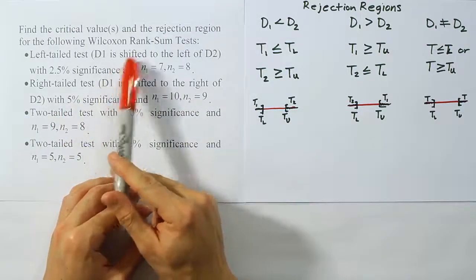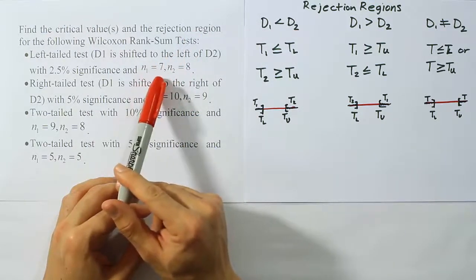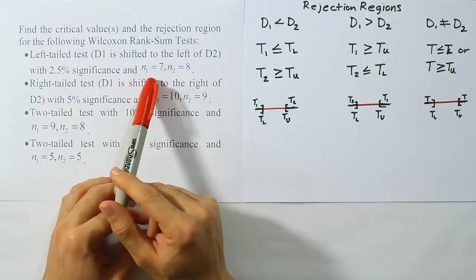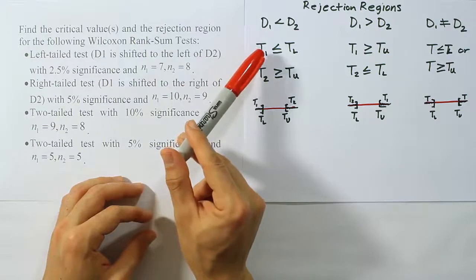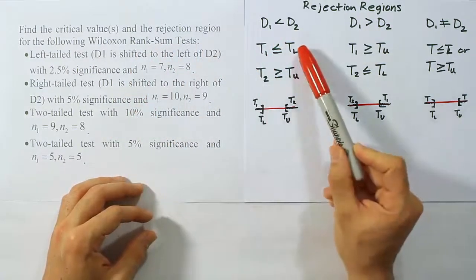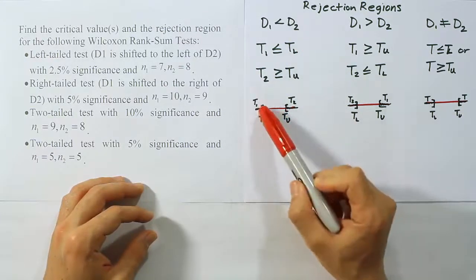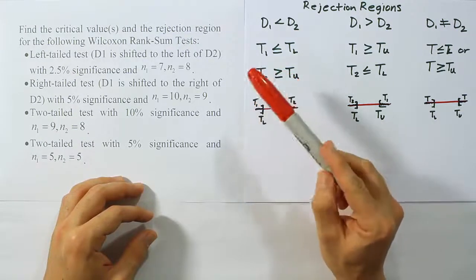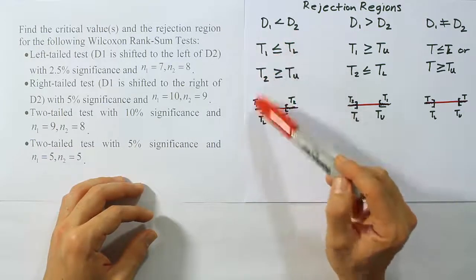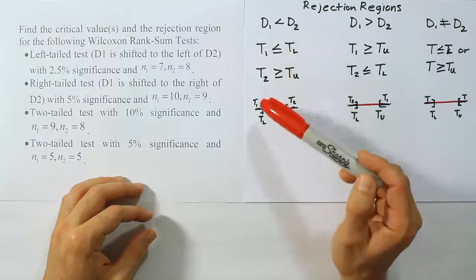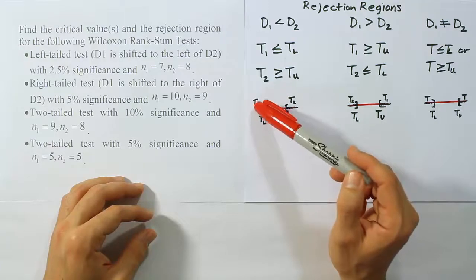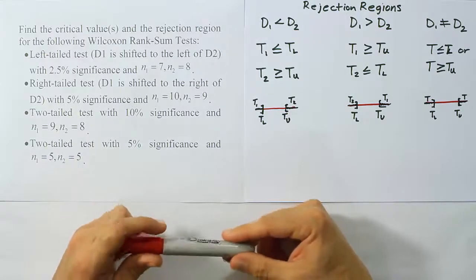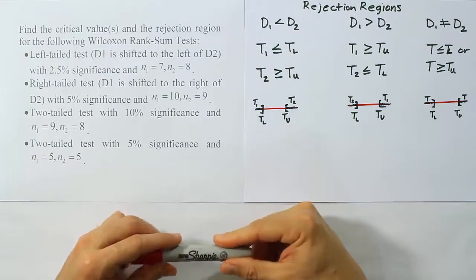For this first case, because N1 is smaller than N2, we use T1 as our test statistic. The rejection region is T1 less than or equal to T lower. T lower is the critical value we get from our table. If T1 is very small — smaller than or equal to that critical value TL — we reject the null hypothesis. Let's go find what TL and TU are for our test.